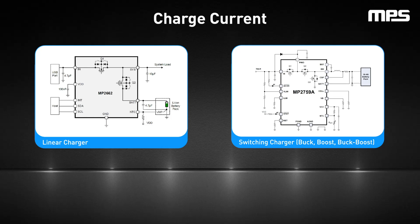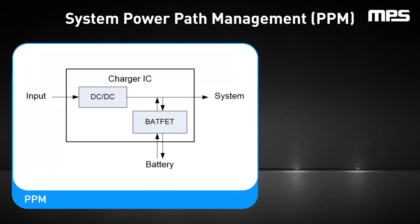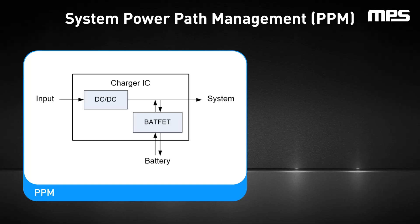Designers should consider how the charge current relates to charger topology selection. For currents up to 500 milliamps, a linear charger is the go-to, thanks to its reduced cost and size. For anything more robust, a switching charger is the answer, reducing power loss and boosting efficiency. Power Path Management, or PPM, adjusts the battery charge current based on the input source current capabilities and the system load current requirement.